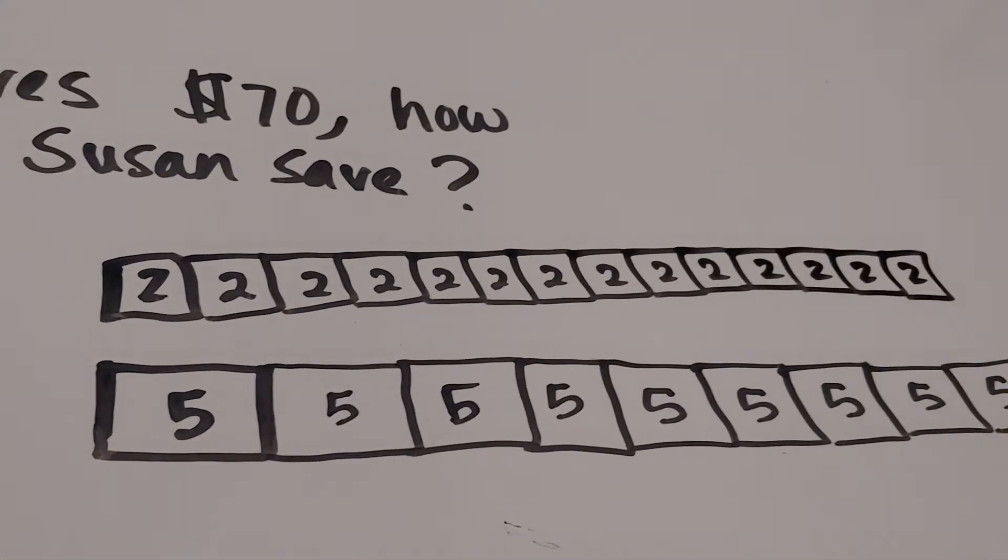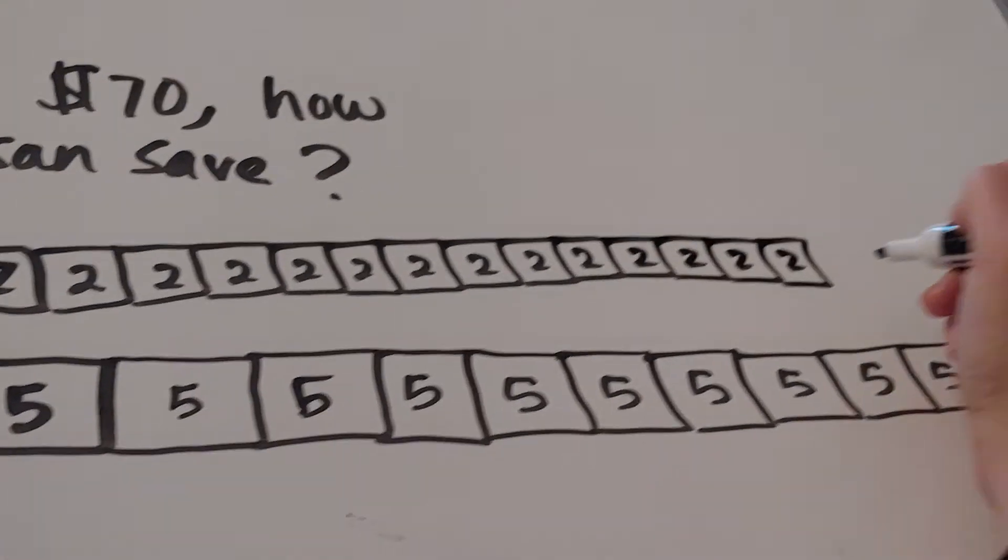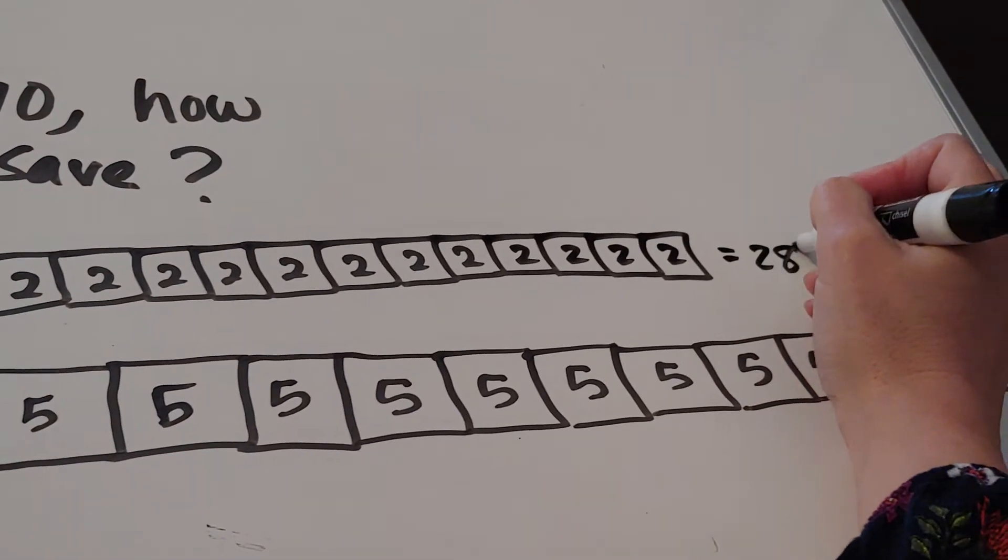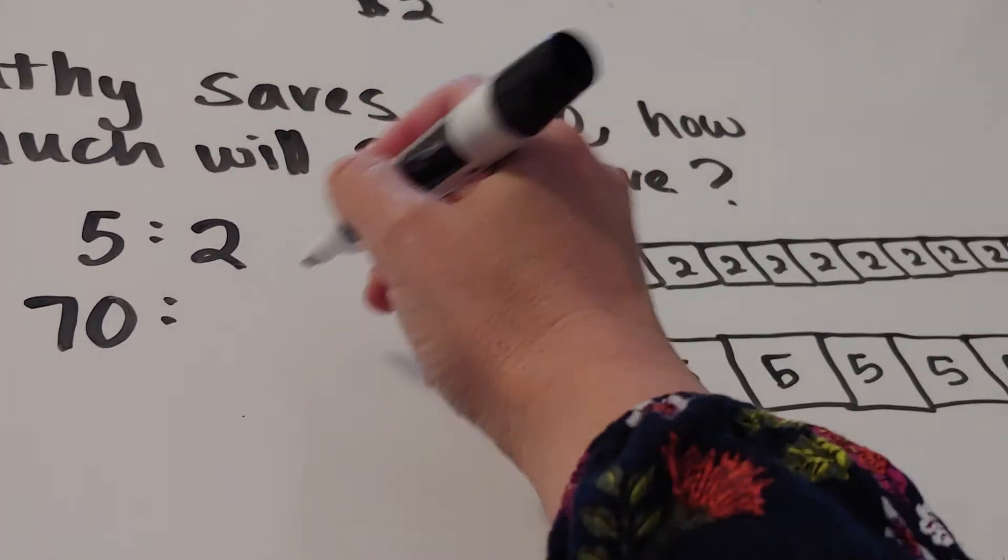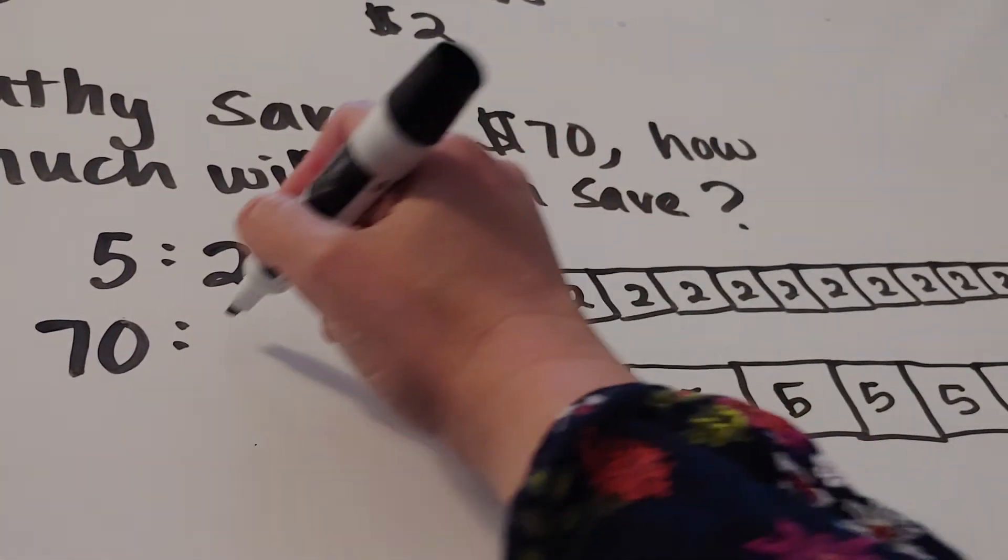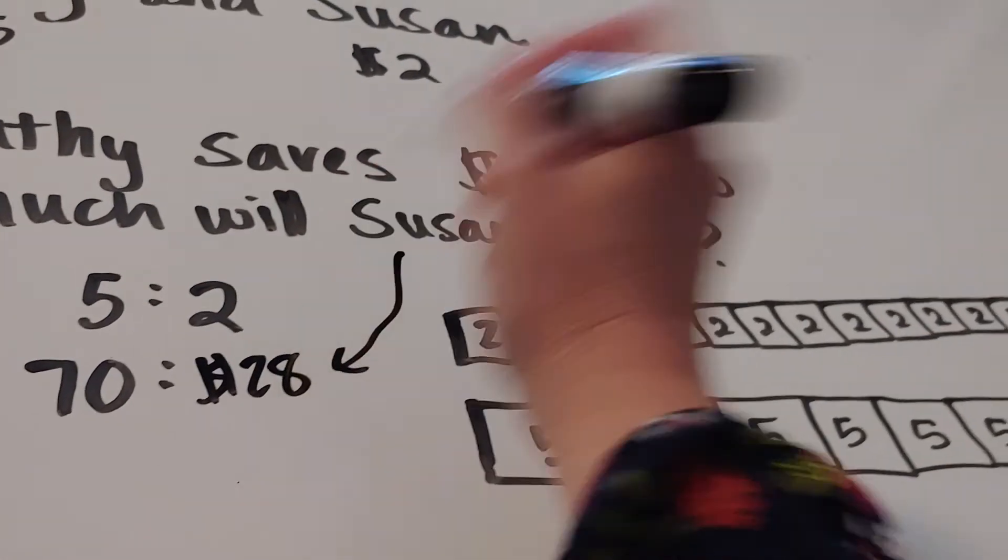So 14 times 2 is 28. We now know by our picture, by using a tape diagram, that Susan will save $28.